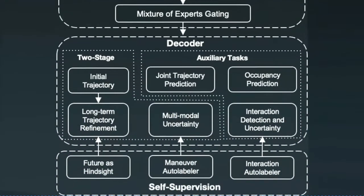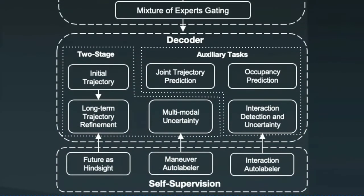The decoder has two subgroups. The first is two-stage multimodal trajectory prediction. It outputs a multimodal distribution of trajectories with positional variance, achieved through an initial prediction and a refinement step for the longer time horizon.